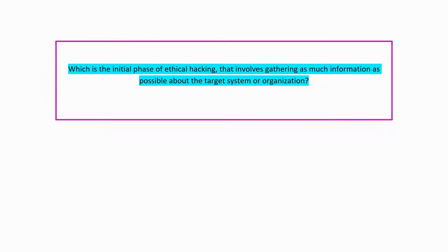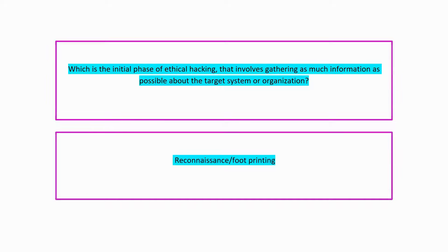Next question: which is the initial phase of ethical hacking that involves gathering as much information as possible about the target system or the organization? We already discussed this — reconnaissance or footprinting.